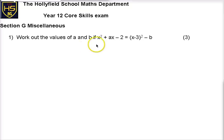So work out the values of a and b if x squared plus ax minus 2 is equal to this. So let's write this out. x squared plus ax minus 2 is equal to x minus 3 squared minus b. So let's expand up this right-hand side and see what we can compare between this side and this side. I think that's possibly the best way to go forward.